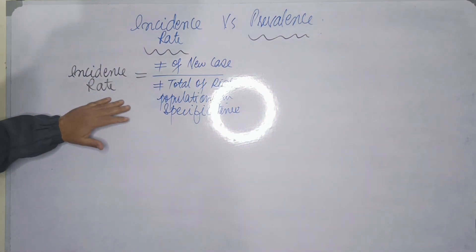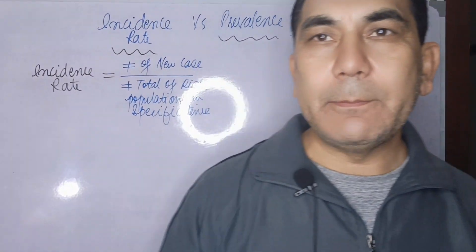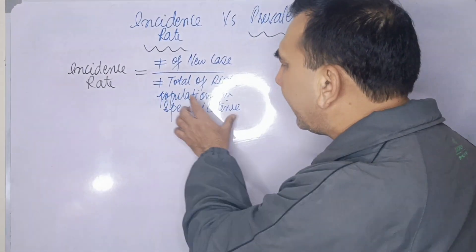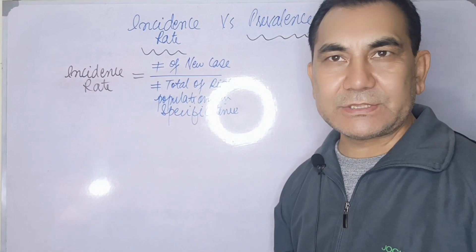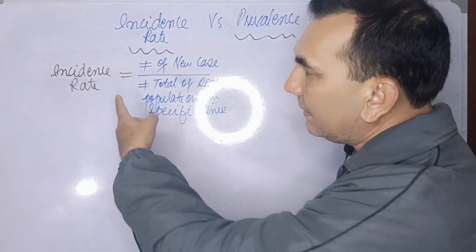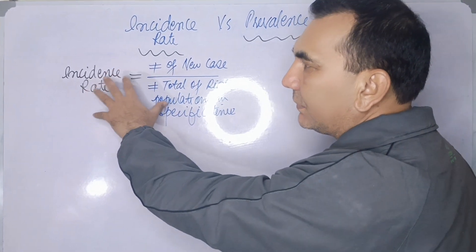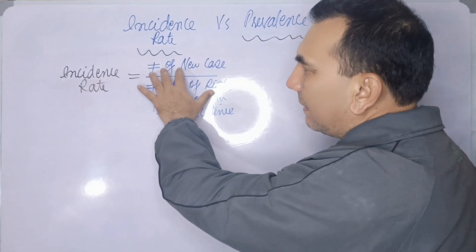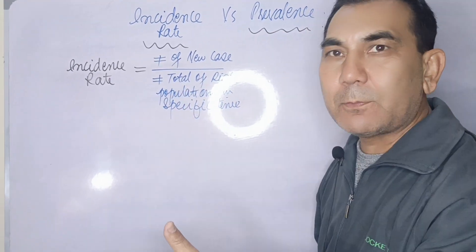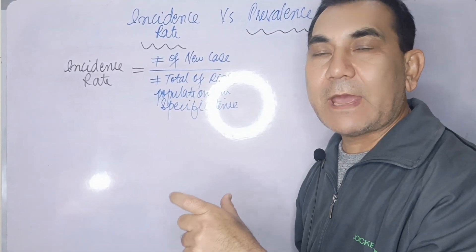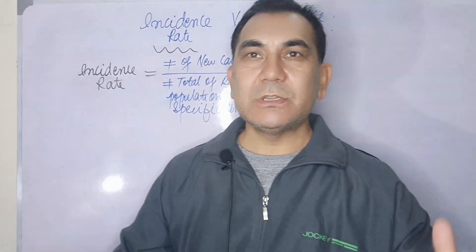Whenever you calculate a rate in epidemiology, keep in mind that the time should be specific. The formula for the incidence rate is the number of new cases divided by the total number of the risk population in a specific time period. So incidence rate is simply the number of new cases in a specific time period.